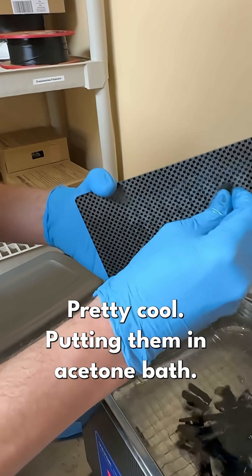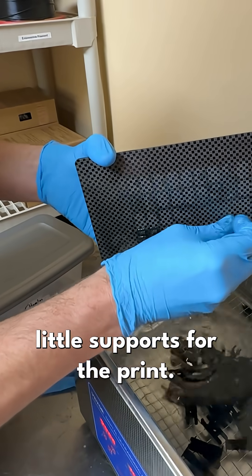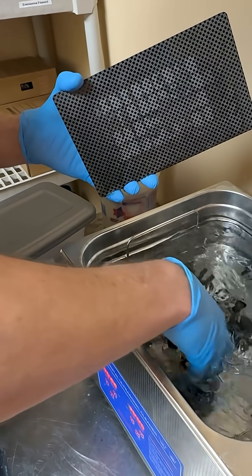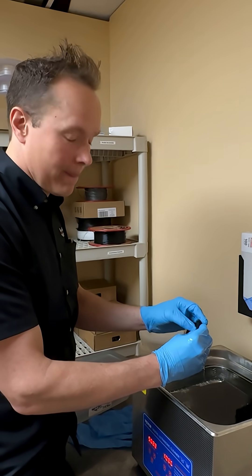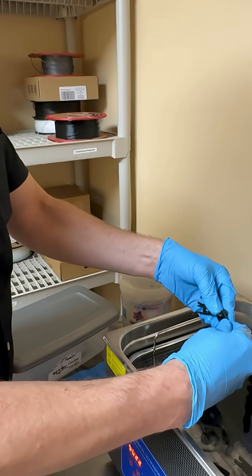Bring them in the acetone bath. This is just the little supports for the print. Getting these 3D printed parts off the plate.